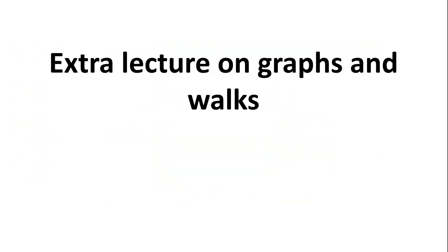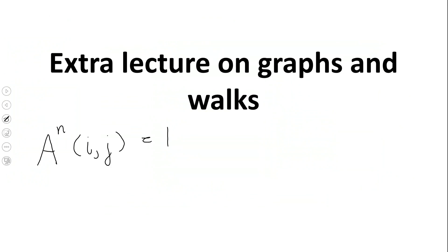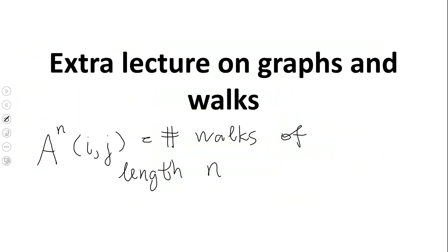Good day everyone. By popular demand, I'm going to record this little lecture about graphs, adjacency matrices, and the works. Basically, what I want to explain is that if we have a graph with adjacency matrix A, and we take the nth power of the adjacency matrix, then the element in the ith row and jth column is going to be the number of walks of length n — where n is the same as the power — from vertex i to vertex j.